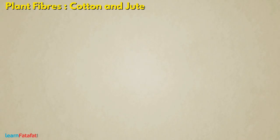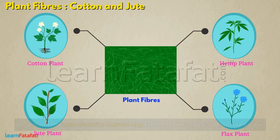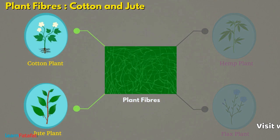We obtain plant fibers from plants such as cotton, jute, hemp, flax, etc. In this video, we will understand more about cotton and jute fibers.